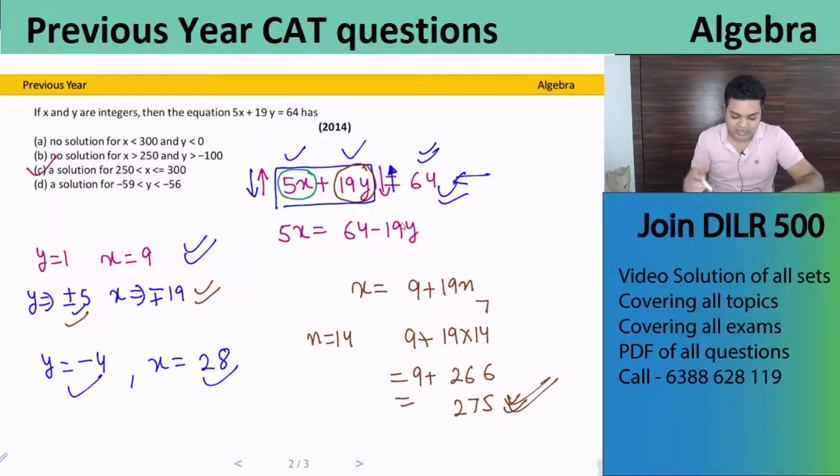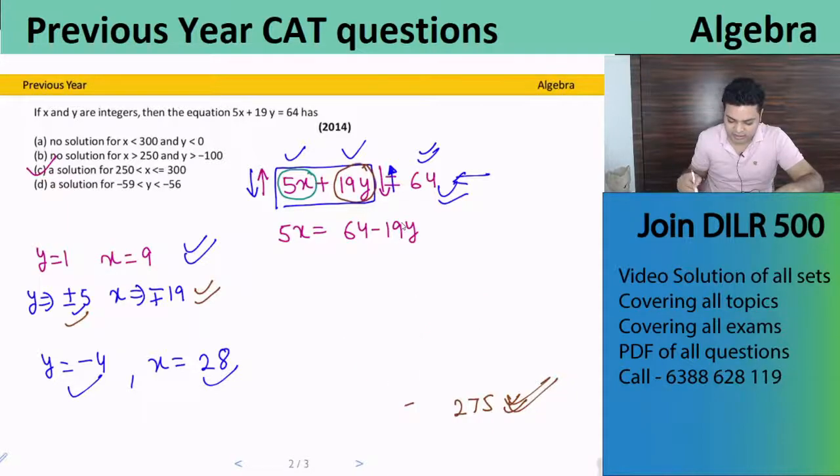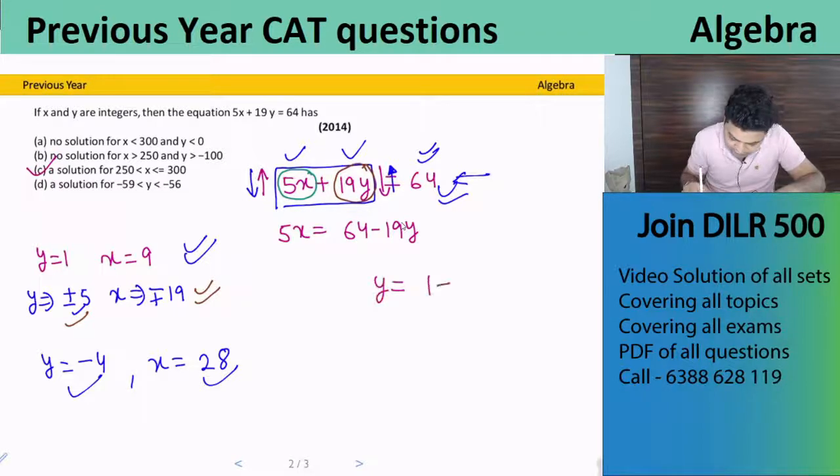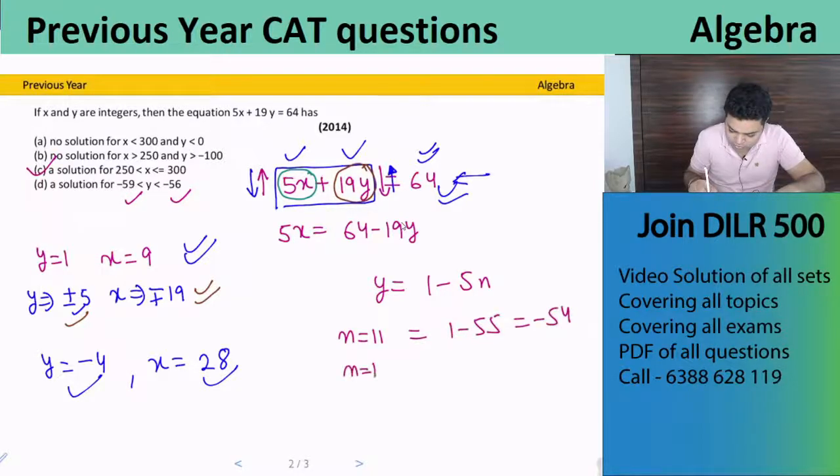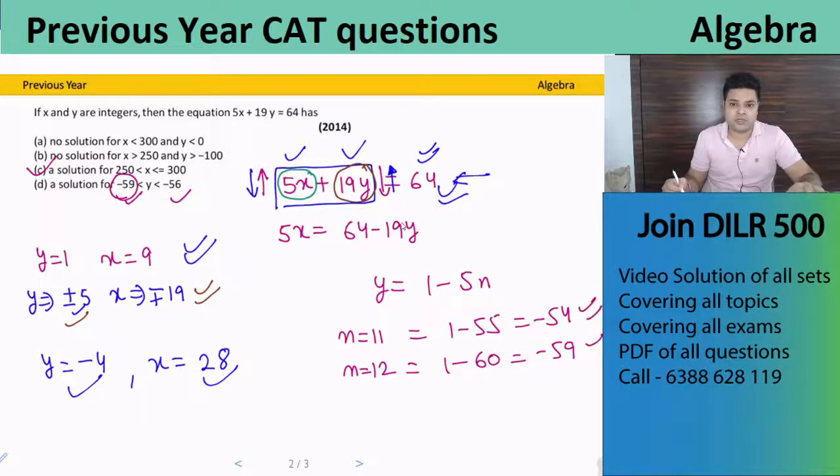Let's check the last one just to be confirmed: a solution for y greater than minus 59 and y less than minus 56. So y is 1 minus 5n. It's asking for minus 59 and minus 56. If n equals 11, we get 1 minus 55, that is minus 54. If n equals 12, we get 1 minus 60, that is minus 59. So between minus 59 and minus 54, there's no solution in that range. So this cannot be my answer.